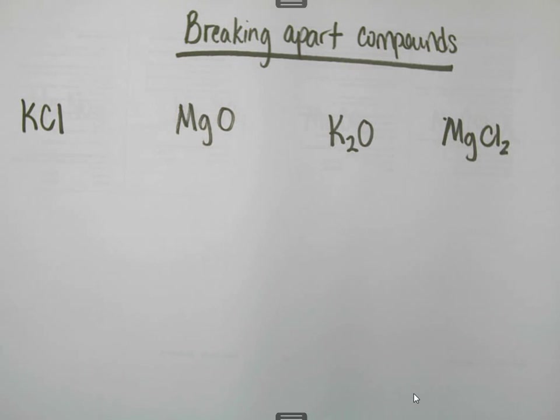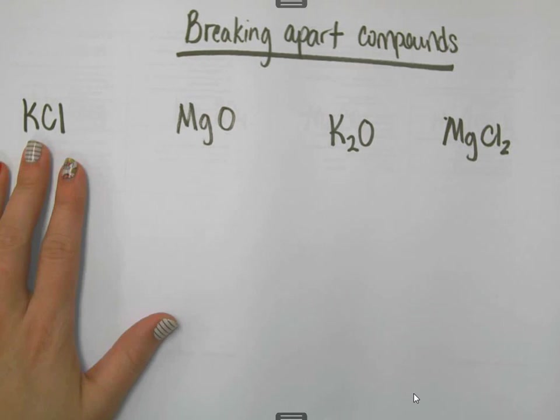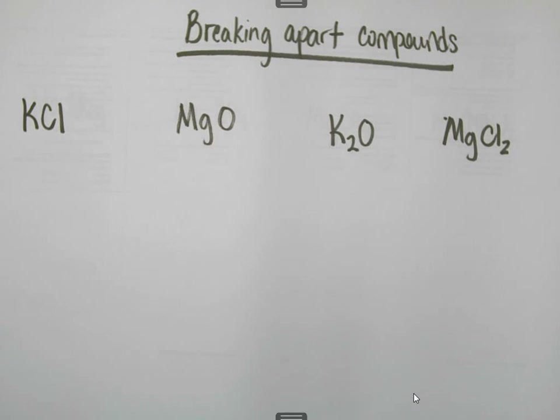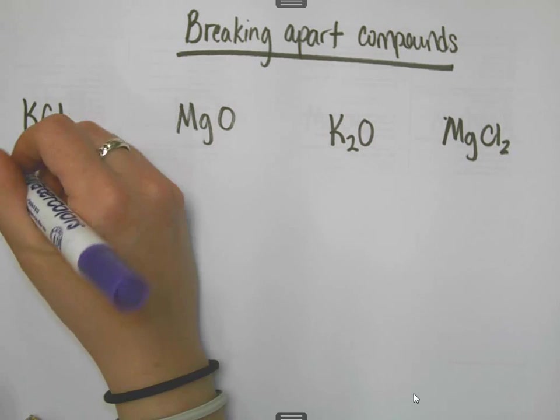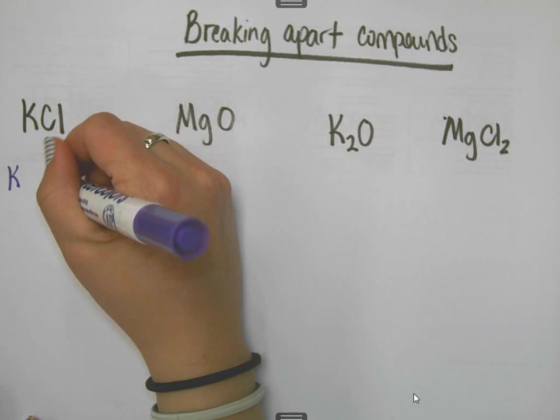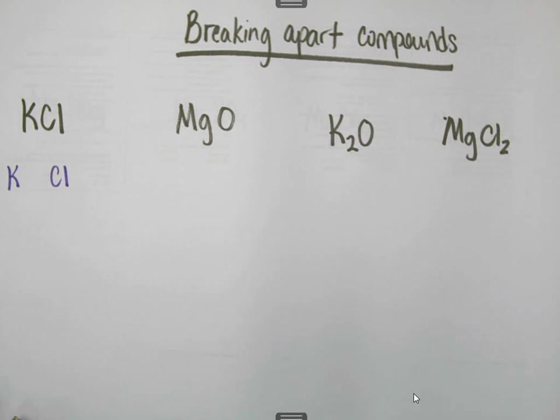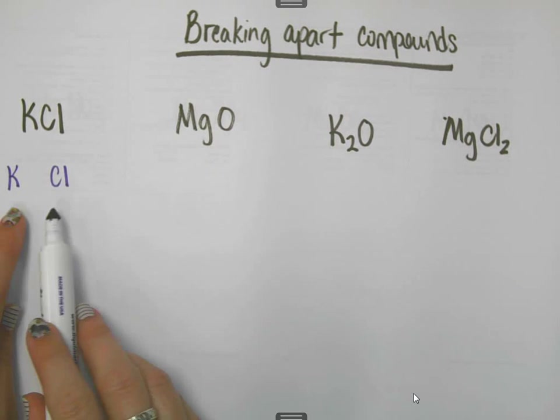So we're going to attempt to work backwards from how we originally wrote ionic compounds. I've got quite a few examples to work with. The first one is potassium chloride, and if you remember from what we did before, potassium chloride is made up of two ingredients. It's made up of potassium and chlorine. We need to break everything up just like this.